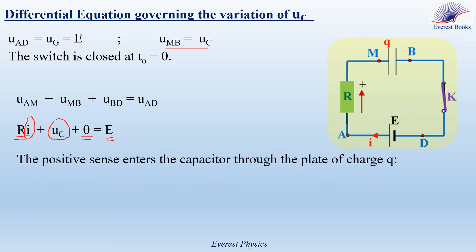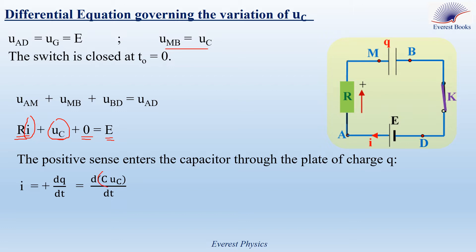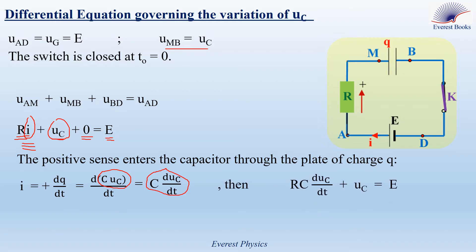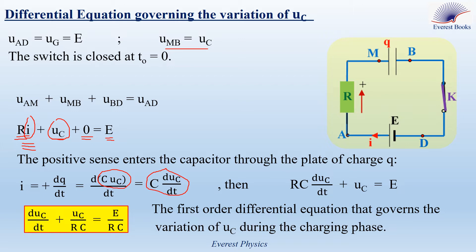Looking at the circuit, the positive sense enters the capacitor through the plate of charge Q, so I equals plus DQ by DT. Since Q equals C times UC, differentiating with respect to time and noting C is constant gives DQ/DT equals C times DUC/DT. Replacing I in the equation gives RC times DUC/DT plus UC equals E. Dividing by RC: DUC/DT plus UC over RC equals E over RC. This is the first-order differential equation governing the variation of UC during the charging phase.